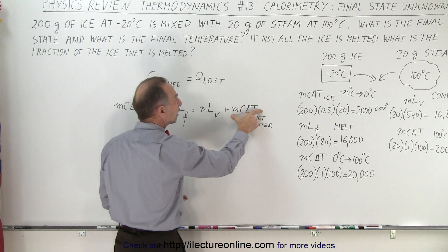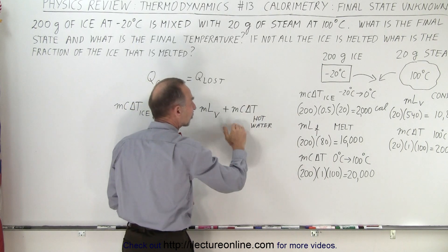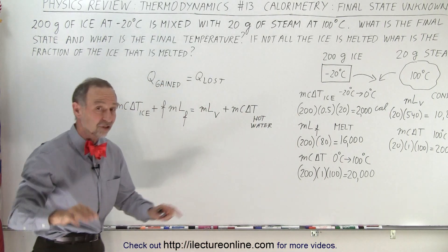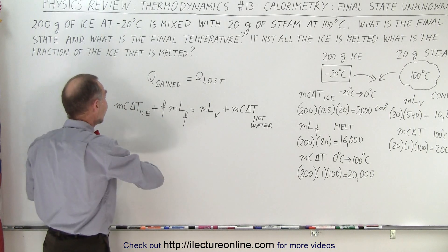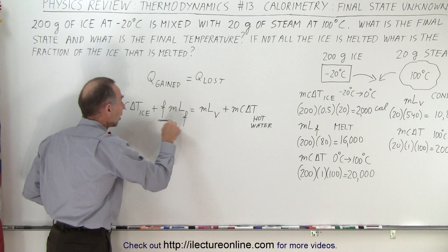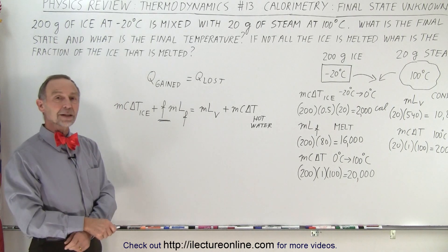And that equals all the heat released by the steam when it goes from vapor to water. That's to condense the water. And then here, that's the amount of heat that's released when the water goes from 100 down to 0 degrees Celsius. At that point, the heat exchange stops. And now all we need to do is solve this equation for the fraction of the ice that is melted.